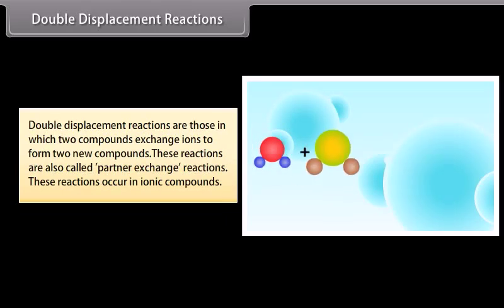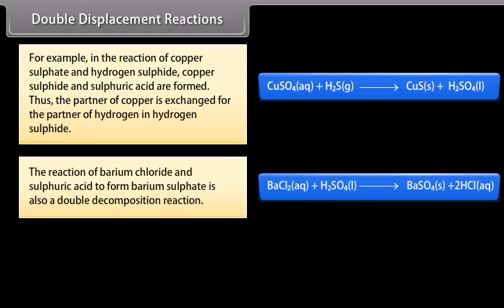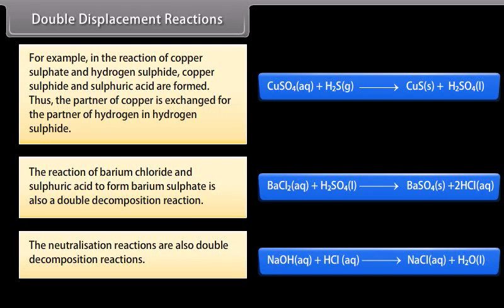Double displacement reactions are those in which two compounds exchange ions to form two new compounds. They are also called partner exchange reactions and occur in ionic compounds. For example, in the reaction of copper sulfate and hydrogen sulfate, copper sulfate and sulfuric acid are formed — the partner of copper is exchanged for the partner of hydrogen. The reaction of barium chloride and sulfuric acid to form barium sulfate is also a double displacement reaction. Neutralization reactions are also double decomposition reactions.